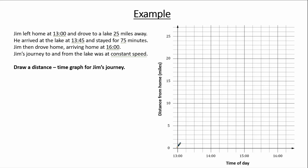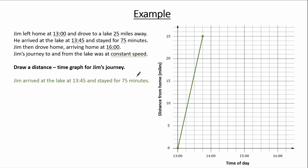Drawing the graph: the journey starts at 13:00 at 0 miles — we mark that point. He drives to the lake 25 miles away, arriving at 13:45, so we mark the point at 13:45 and 25 miles, then join the two points with a straight line. Next, Jim stayed at the lake from 13:45 for 75 minutes, which is 1 hour 15 minutes, taking us to 15:00. We mark the point at 15:00 and 25 miles — since he is stationary, the distance stays at 25 miles — and join these two points with a horizontal line.